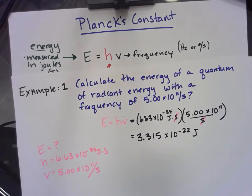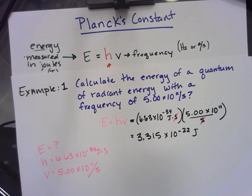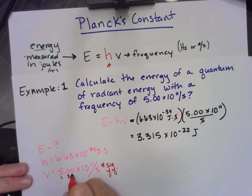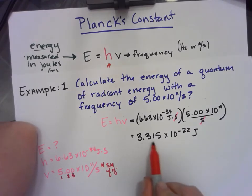Now I have to consider my significant figures. Planck's constant is not what I'm going to use for sig figs because it is given. So this number right here is for sig figs. And there's one, two, three significant figures in my frequency. So that means I can report three significant figures in the coefficient here.